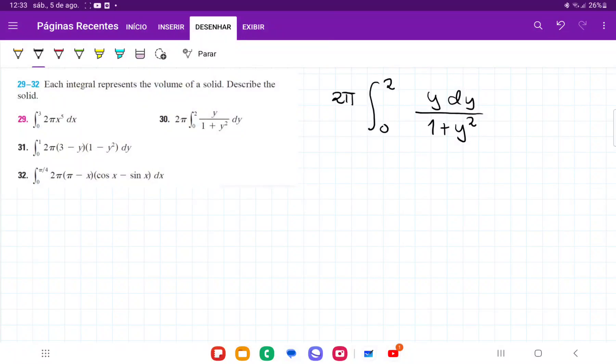So for number 30, we want to reverse engineer this integral. This is the integral that resulted after a solid of revolution, and now we want to work backwards and figure out what that situation represents. We can see here that this integral is a dy, so that means that it was summed up across the y-axis.